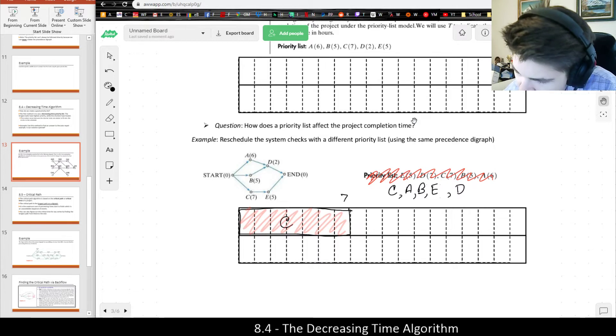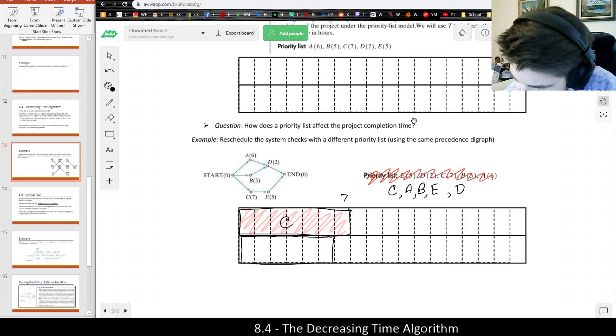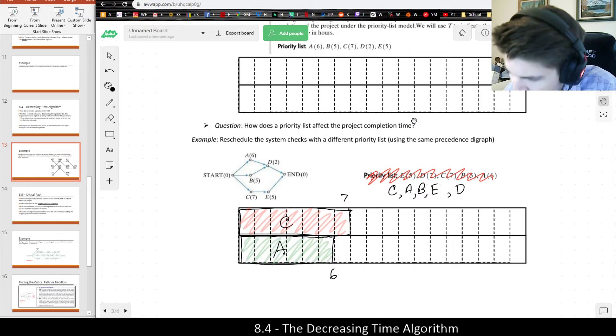And then A would come next, which is six. And I'll use green. And then now A is done.